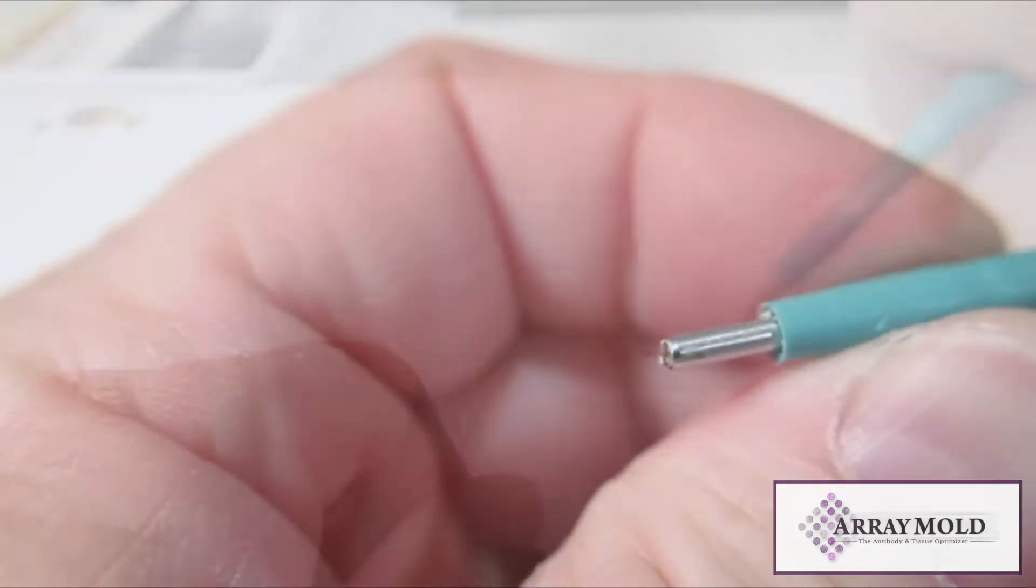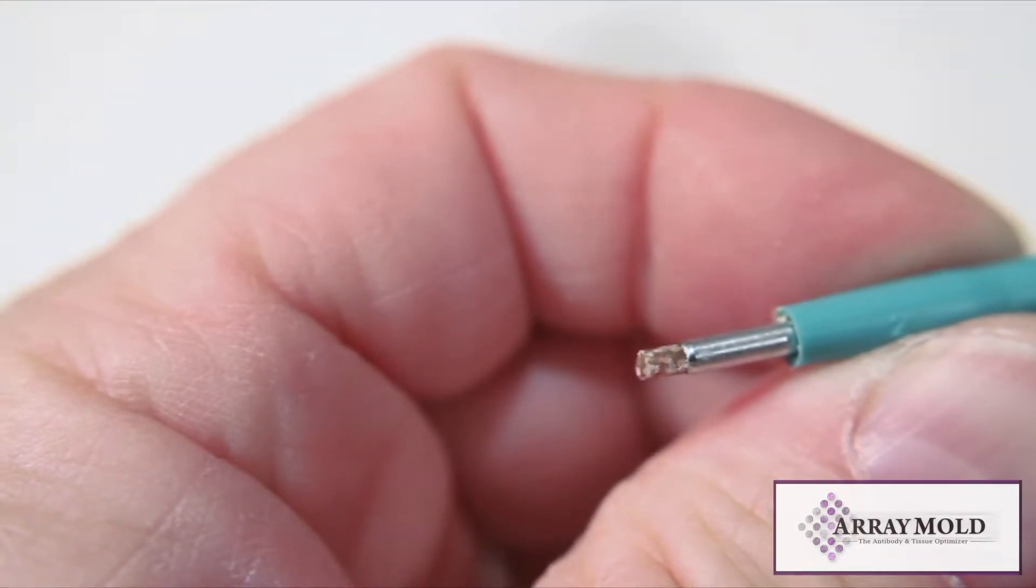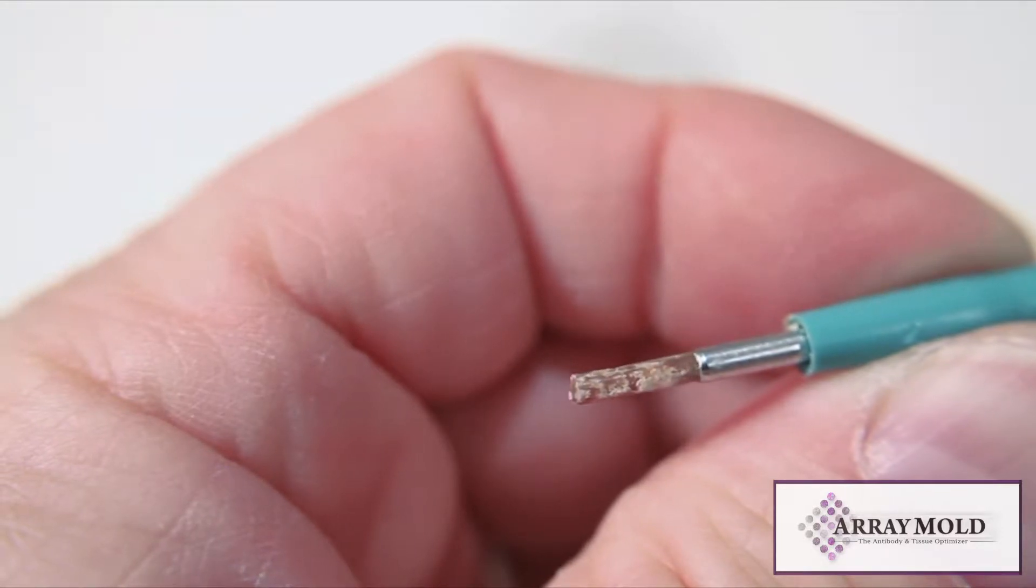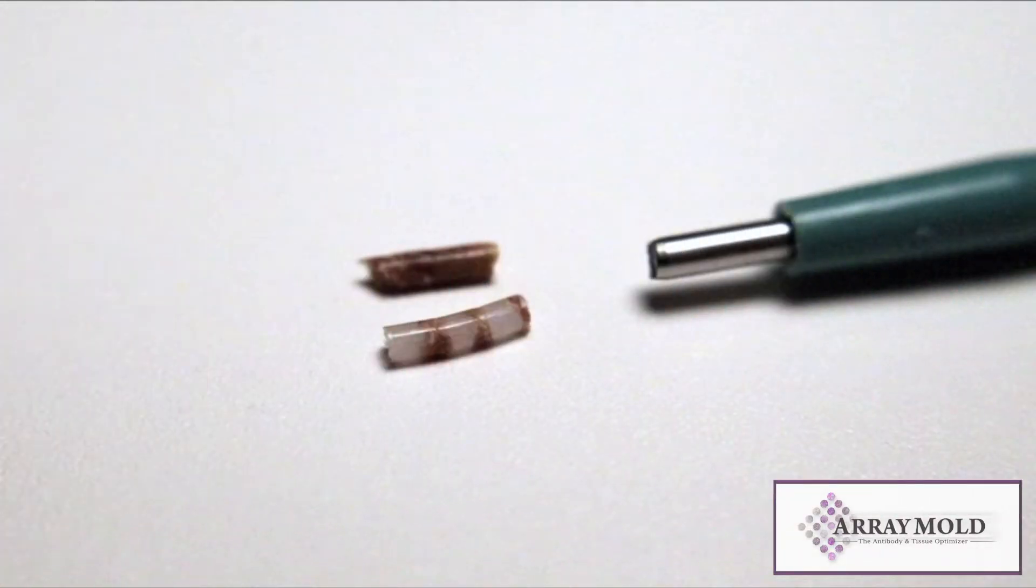Place the needle end down on the table and push the stylet down several times, packing the tissue into a tight core. Now the tissue is ready to insert into your array mold block.